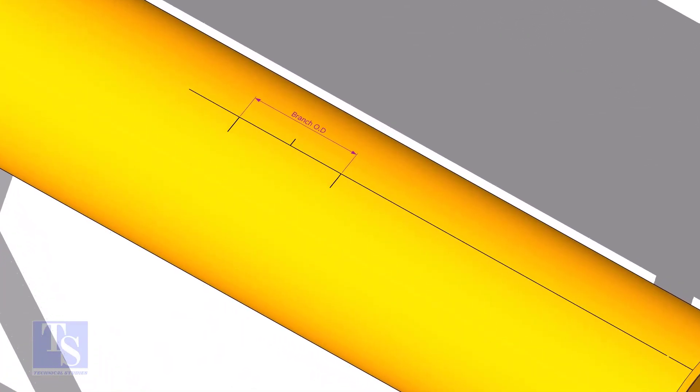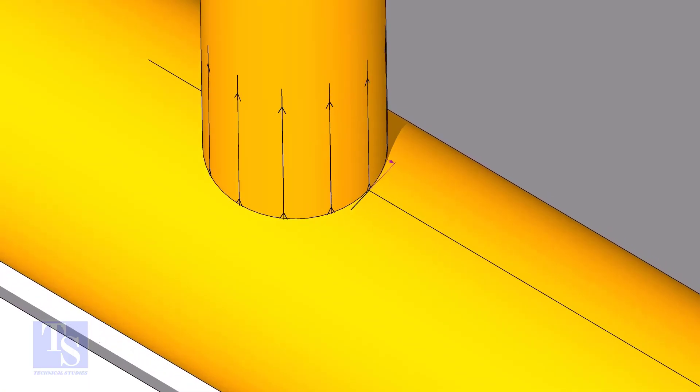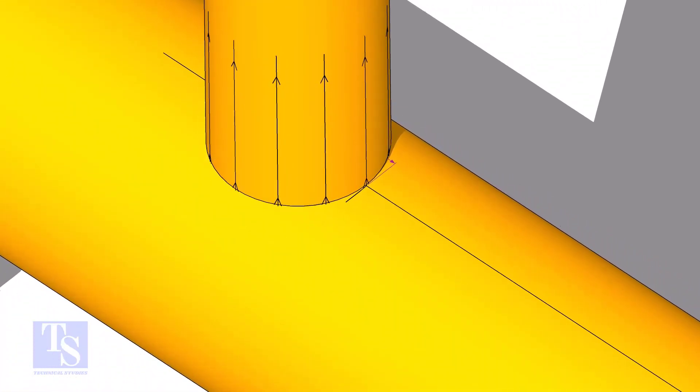Mark the branch OD on the center line of the header. Put the branch exactly on this marking, matching the branch center line.